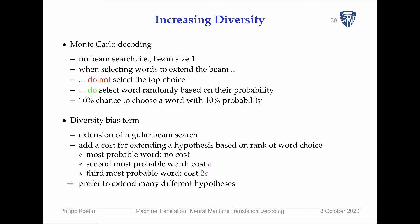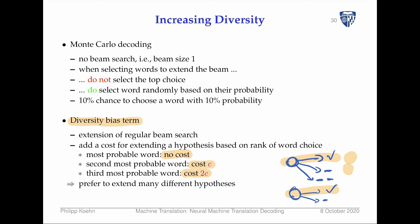Another method is to extend regular beam search with a diversity bias term. We add a cost for extending a hypothesis based on the rank of the word choice: picking the most probable word has no cost, the second most probable has some cost, the third even more. This encourages hypotheses in the beam to make different choices rather than all following the same most-probable path, so we prefer having two distinct hypotheses rather than two very similar ones.